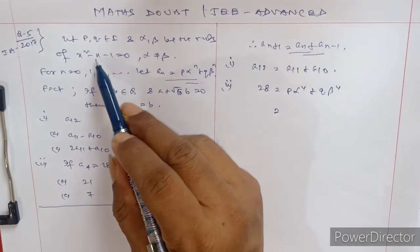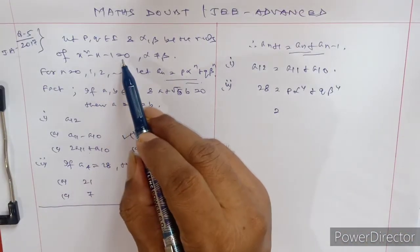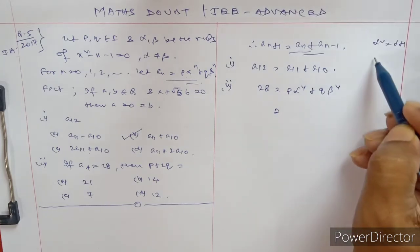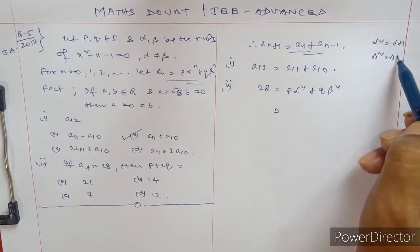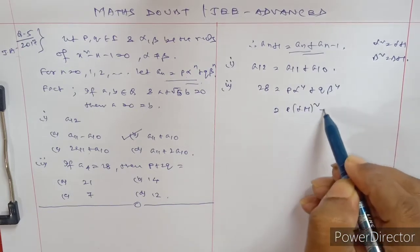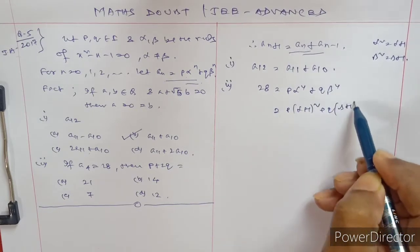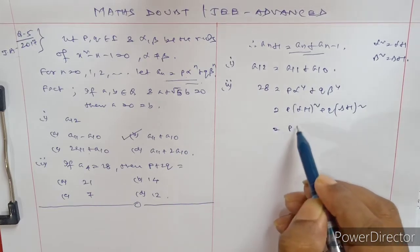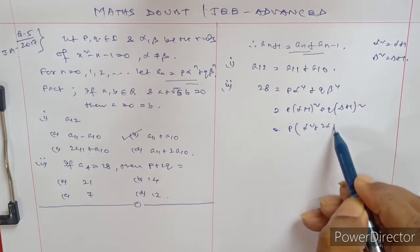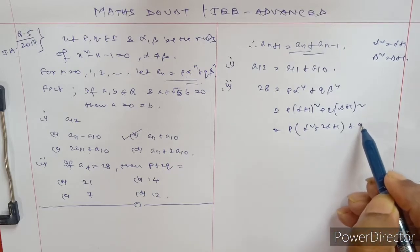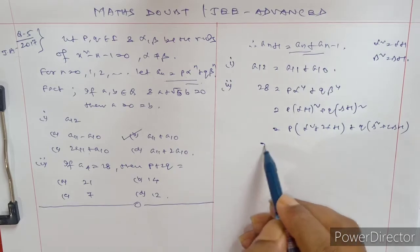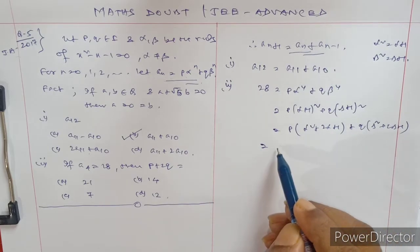Now α⁴ = (α²)² and α² = α + 1, β² = β + 1. So a₄ = p·(α+1)² + q·(β+1)². Expanding: p·(α² + 2α + 1) + q·(β² + 2β + 1).